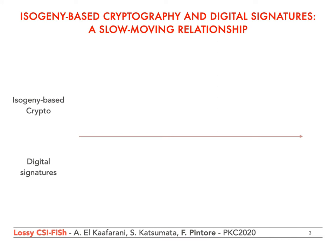Let me start by giving a quick overview on the relationship between isogeny-based cryptography and digital signatures. This relationship has been slow moving until recently, since isogeny-based problems turn out to be quite elusive to use for constructing digital signatures. The 2011 paper by Jao and DeFeo, which introduced the SIDH protocol and coincides with the birth of isogeny-based cryptography, contains an identification protocol but no mention of digital signatures.